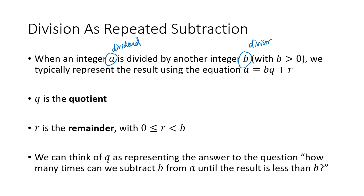When we're dividing a by b, we want to express that relationship as a equals bq plus r, where q is the quotient — that's how many times b goes into a — and r is the remainder, that's how much is left over. We require that the remainder is less than the divisor, and r has to be greater than or equal to zero. We can have a remainder equal to zero, but we can't have negative remainders.